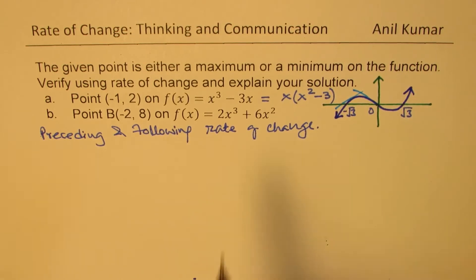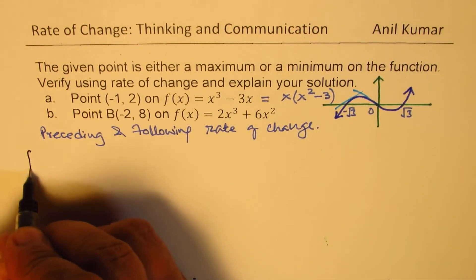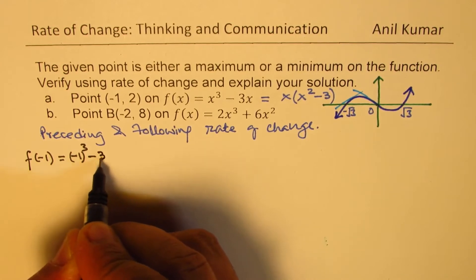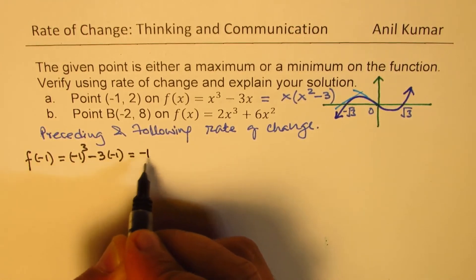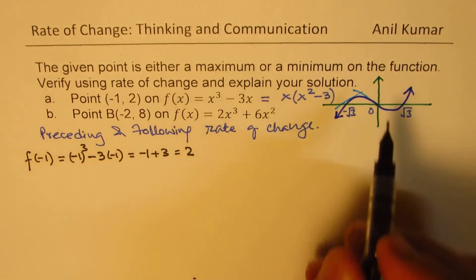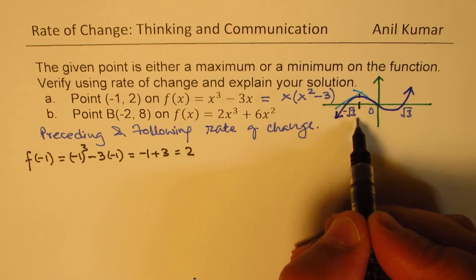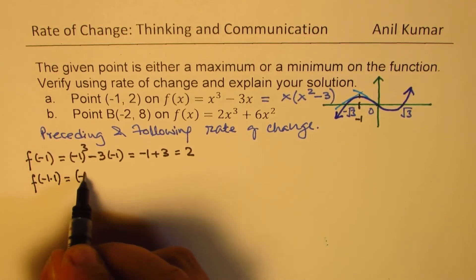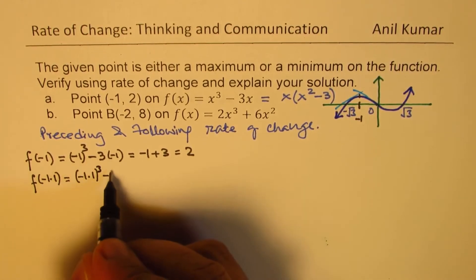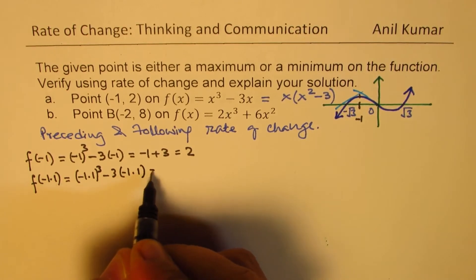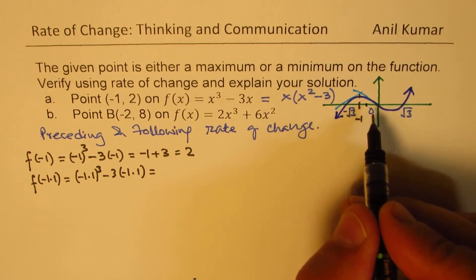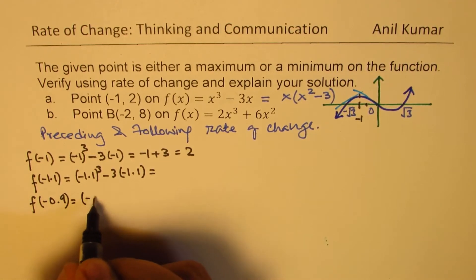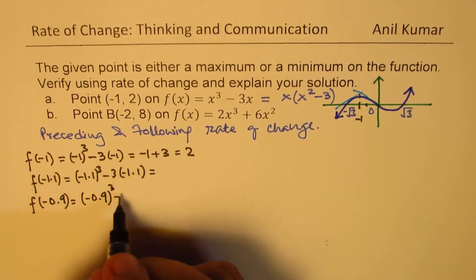Since we are interested in the point minus 1, let's calculate the function value at x equals minus 1: (minus 1) cubed minus 3 times (minus 1) equals minus 1 plus 3 equals 2. So the point (minus 1, 2) is confirmed. A point on the left side of minus 1 will be minus 1.1, and on the right side, minus 0.9.